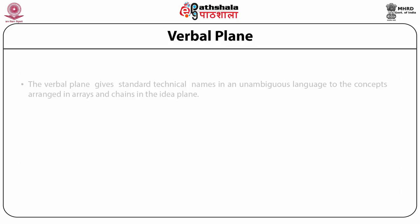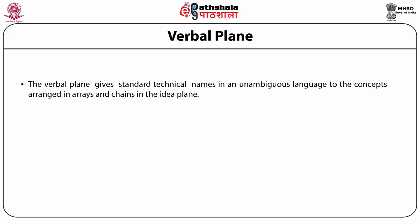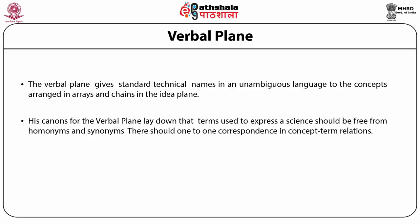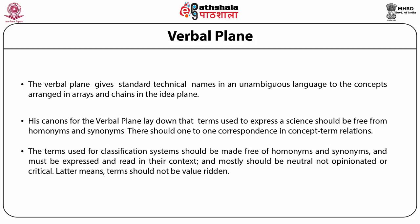The verbal plane gives standard technical names in unambiguous language to the concepts arranged in arrays and chains in the idea plane. Ranganathan's canons for the verbal plane lay down that terms should be free from homonyms and synonyms, with one-to-one correspondence in concept-term relations. Terms used in the classification system must be neutral — not opinionated or critical — and librarians who coin terms should not give names to concepts that could hurt the feelings of others.